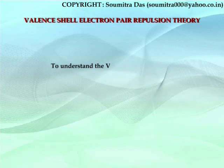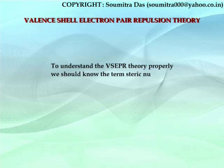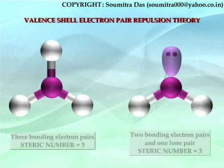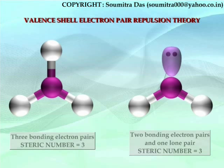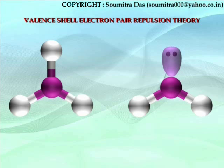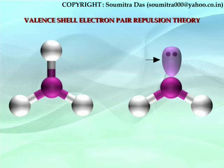To understand the VSEPR theory properly, we should know the term steric number. Steric number is the number of electron pairs in the valence shell of a central atom. These electron pairs may be of two types: bonding electron pair and lone pair.